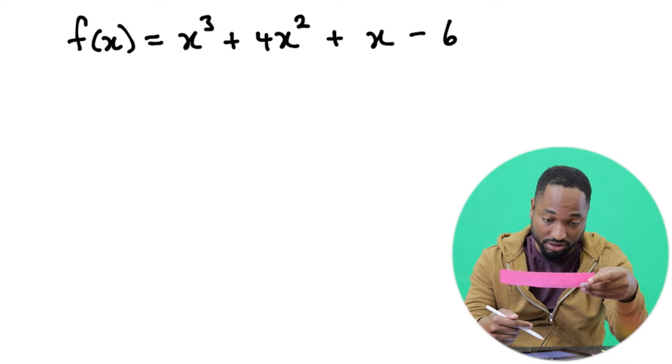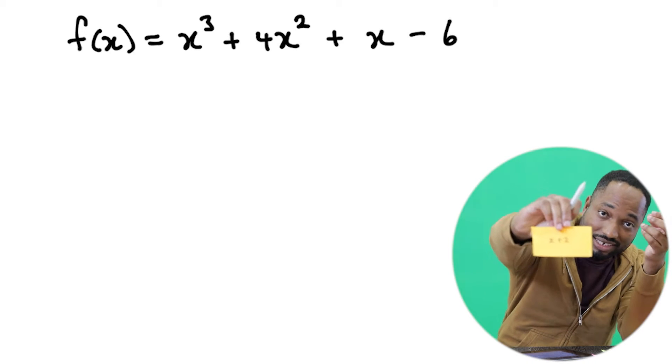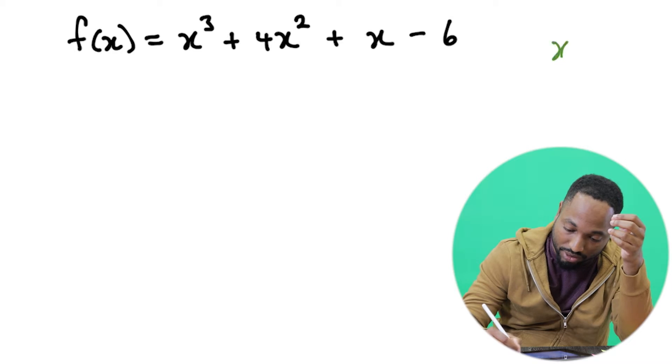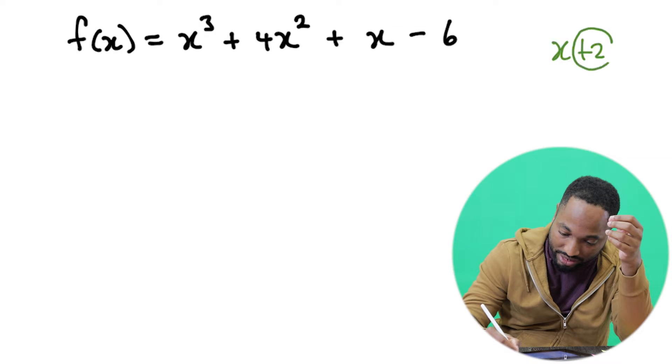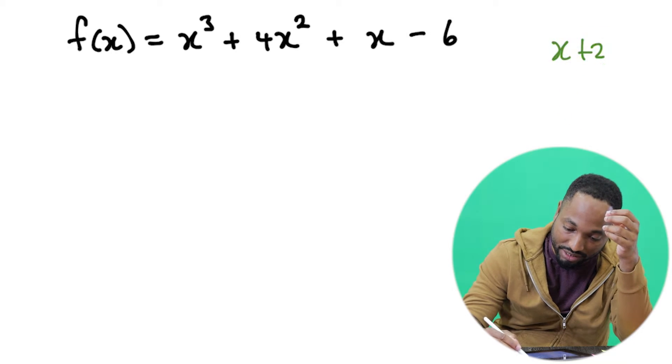So I have the function written out here: x³ + 4x² + x - 6, and this is the linear factor x + 2. Now if x + 2 is a factor, we are saying that if we substitute negative 2 into the function we should get zero.